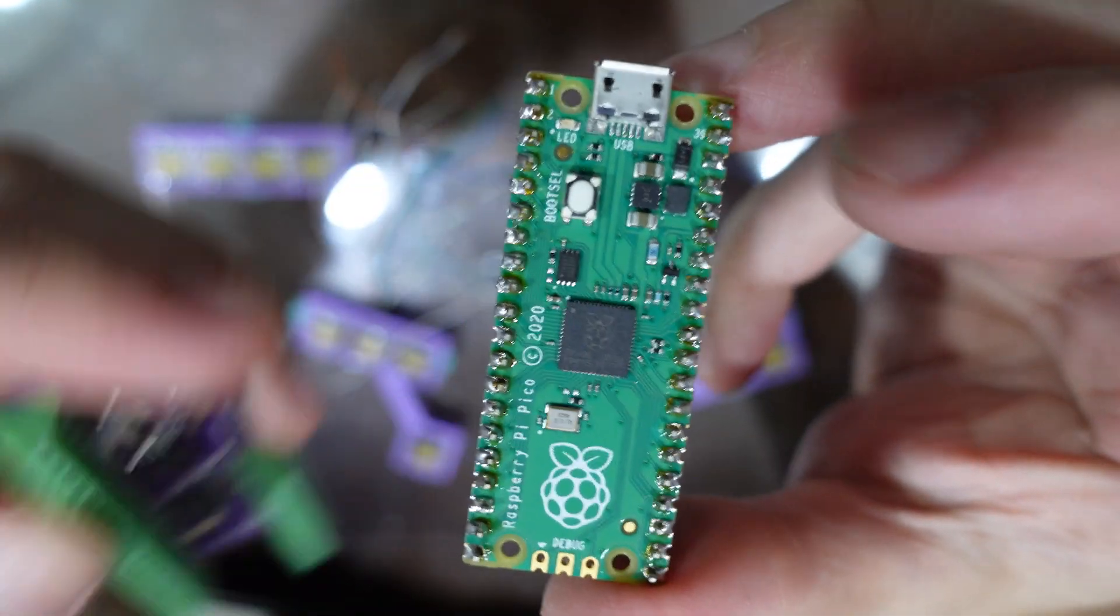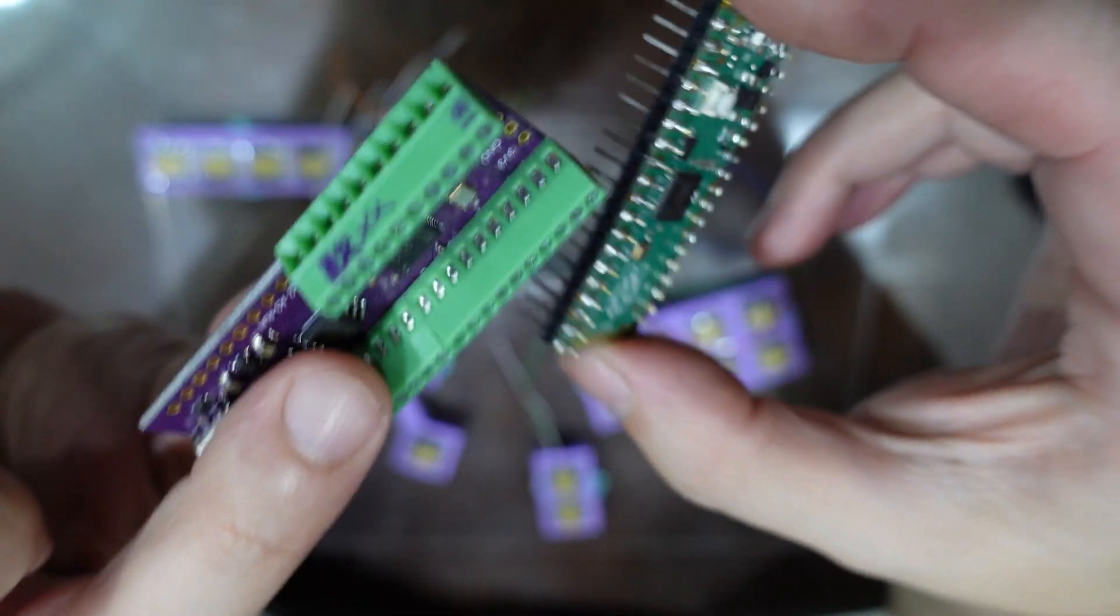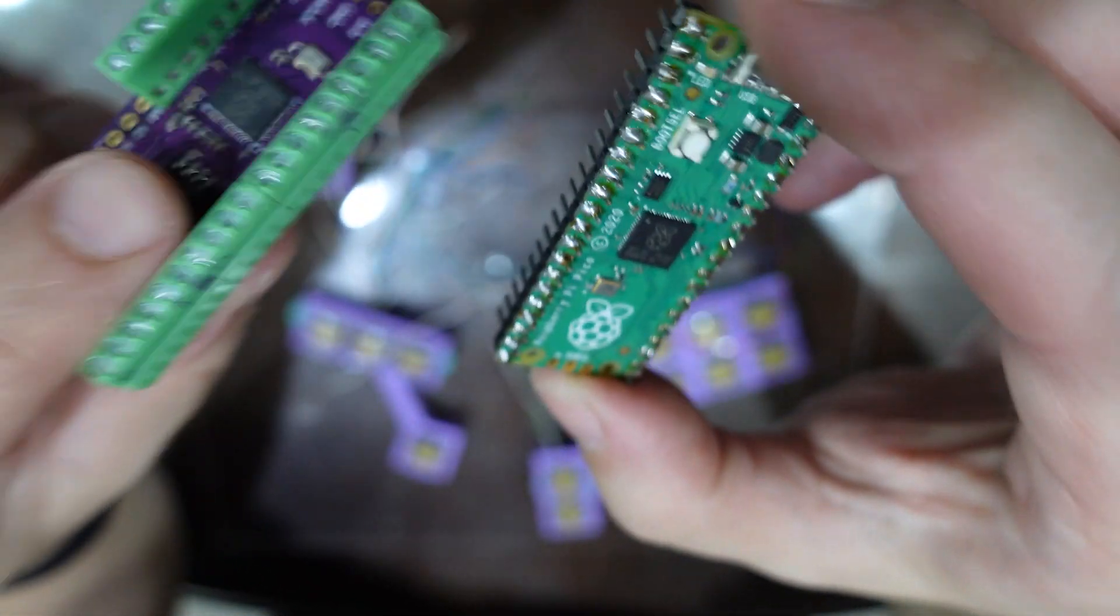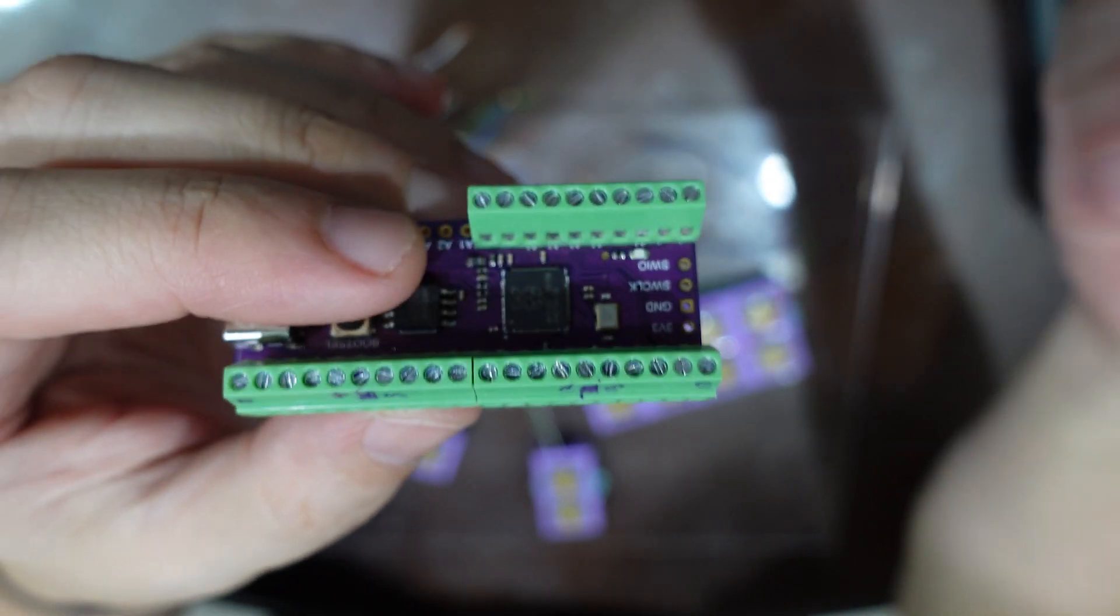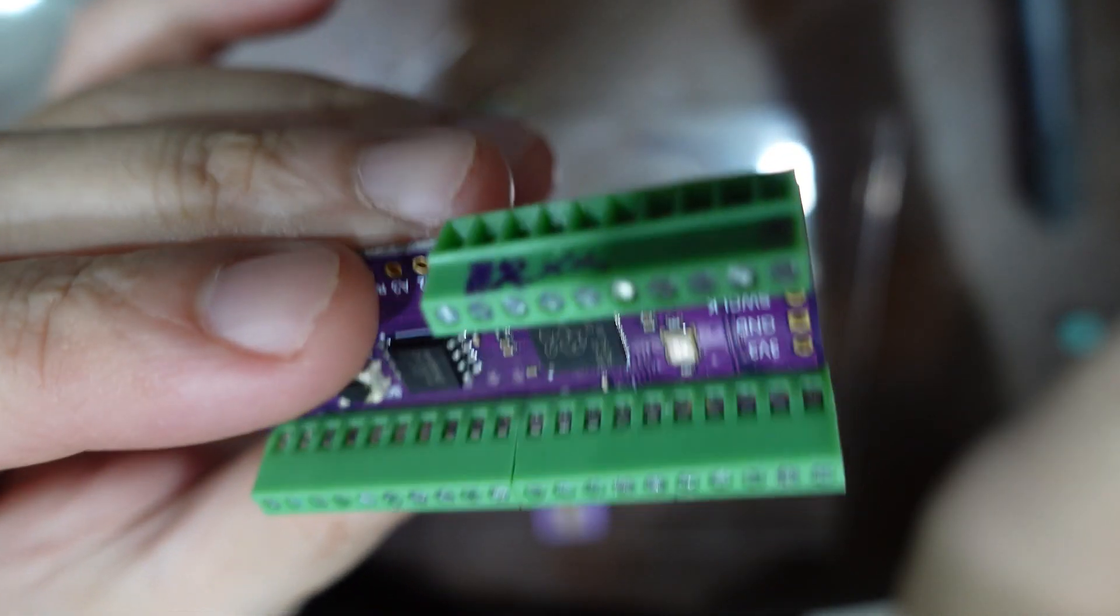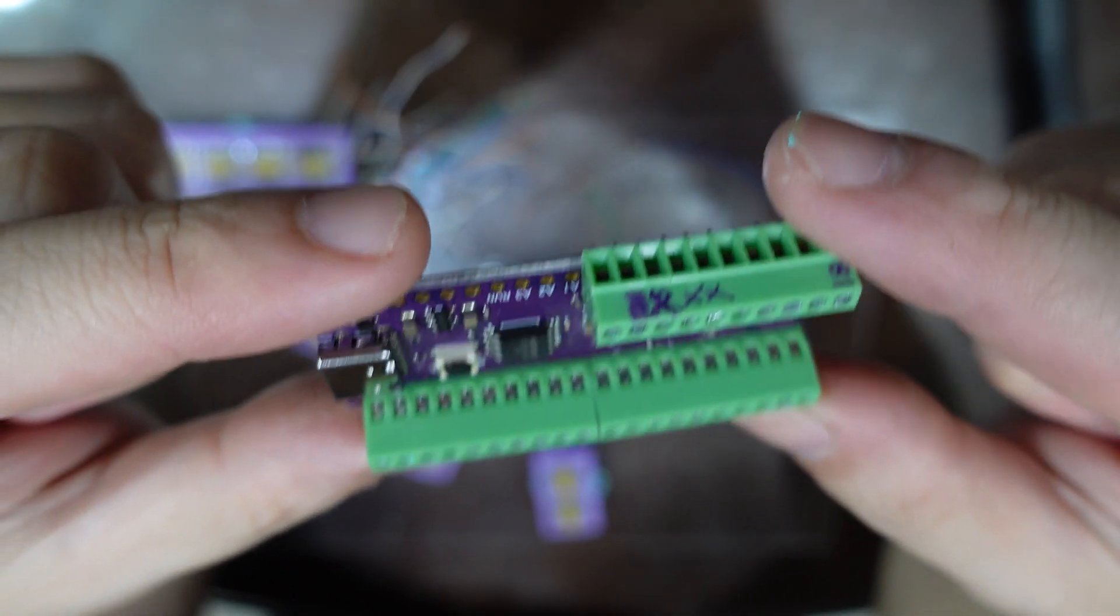Now the reason why I got something like this instead of something like the Brook board is because a simple chip like this is really relatively much cheaper than something like a Brook PCB. After all, it's a very simple microcontroller and notice all the legs and everything have to be soldered yourself onto it. But that's kind of part of the fun if you're trying to build your own board.